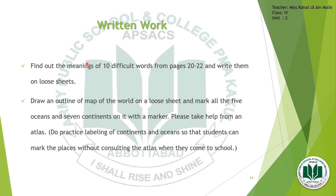I hope everything is clear. Now you have to do some work in your loose sheets and assignment pages. The first task — for week one — is to find out the meanings of ten difficult words from pages 20 to 22 and write them on loose sheets. For week two, draw an outline of the world map on a loose sheet, and mark all five oceans and seven continents on it with a marker.